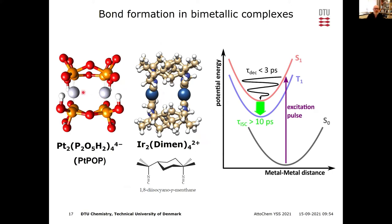We studied two molecules called Pt-pop and iridium diamond, which have two metal atoms that are not chemically bound in the ground state. They are held close to each other by the molecular framework, but when you excite the molecule, a chemical bond forms between the two metal atoms. We chose these because the metals have many electrons and scatter strongly, making them easy to follow in a scattering experiment.